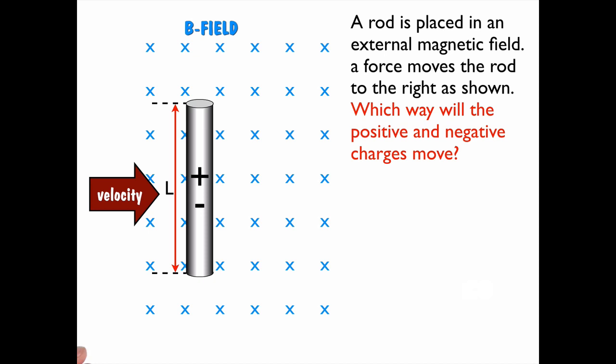So we take this rod, this metal conducting rod, and we put it in a magnetic field, and what we do is we move it. And when we move it, the question is, which way would the positive charges move?